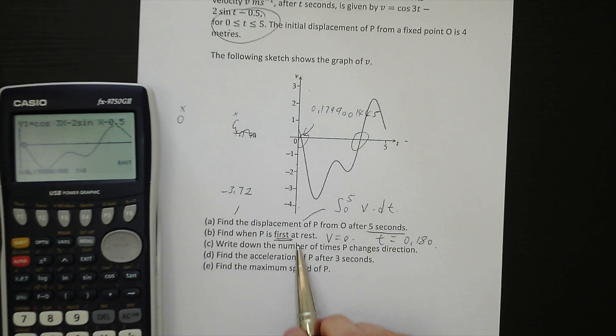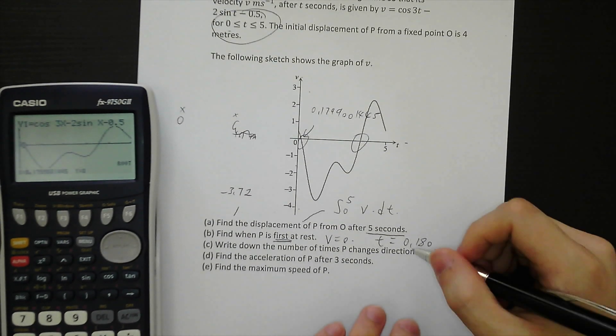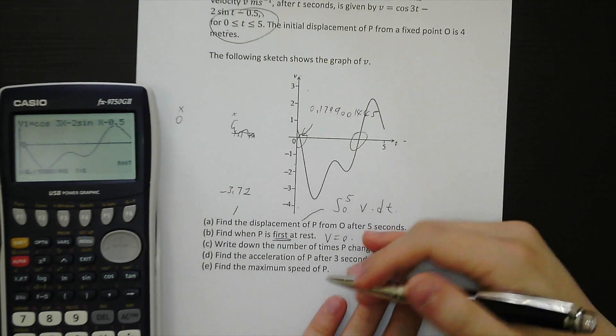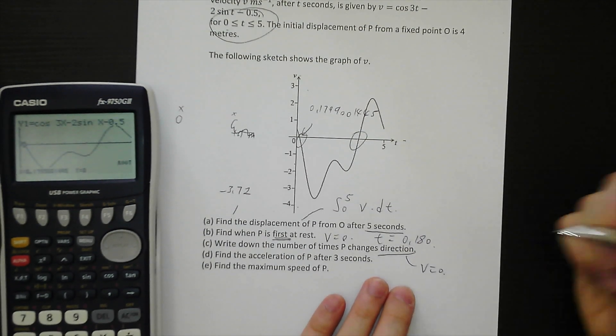Part C, write down the number of times P changes direction. So when you see the keyword 'something changed direction,' that means velocity equals 0 again.